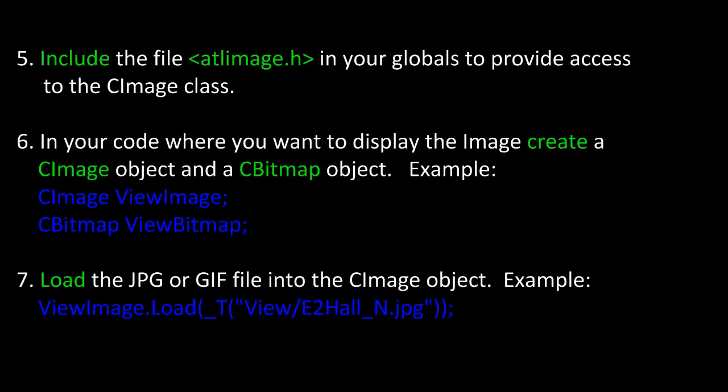Now here's where it gets different. The next thing we need to do is include the file atlimage.h in globals. This will provide us access to the CImage class object. Once we've done this, in the code where we want to display the image, we need to create a CImage object and a CBitmap object — for example, CImage ViewImage and CBitmap ViewBitmap. Do this local within the function so it's created and destroyed each time the function ends.